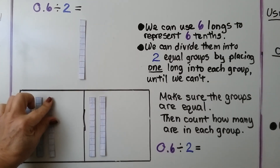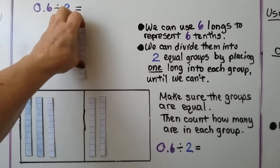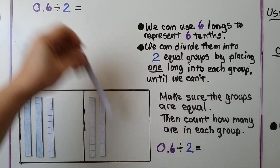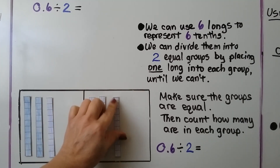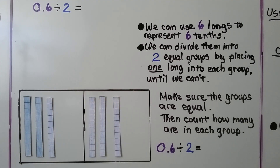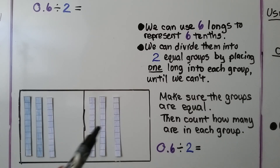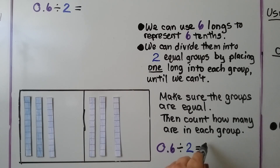We split them up equally and make sure they're equal groups, then count how many are in each group. We have three tenths in each group, so six tenths divided by two is equal to three tenths.